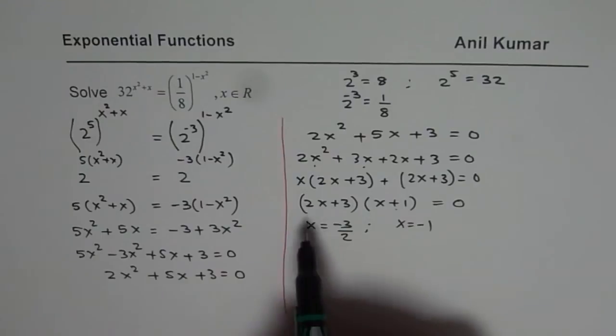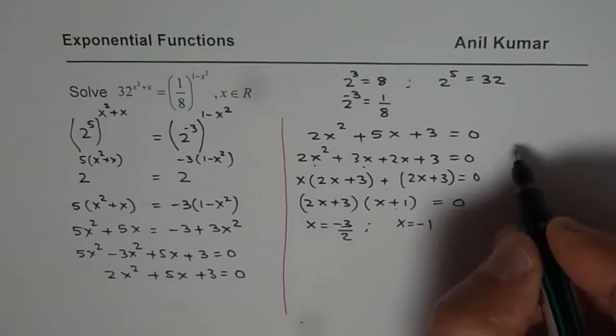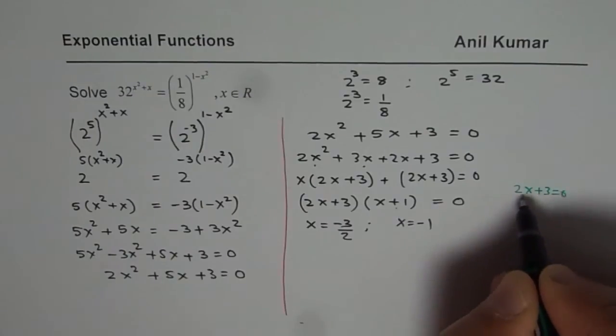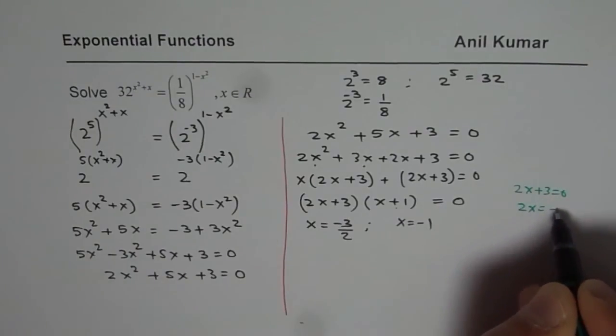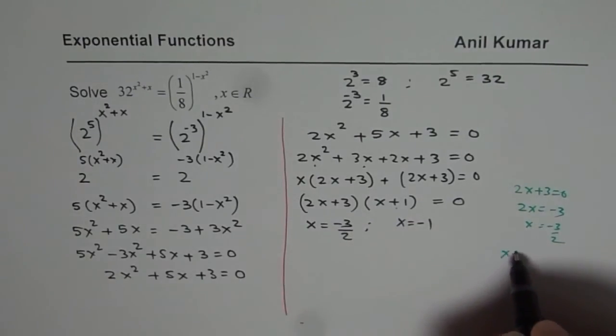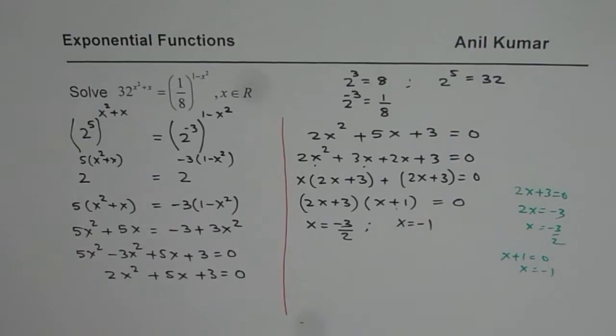I hope you understand this step. What we really did was we equated 2x plus 3 to 0 and solve for x. So 2x equals to minus 3, x equals to minus 3 over 2. Similarly, we did with x plus 1, x plus 1 equals to 0, x equals to minus 1. So you get two solutions.